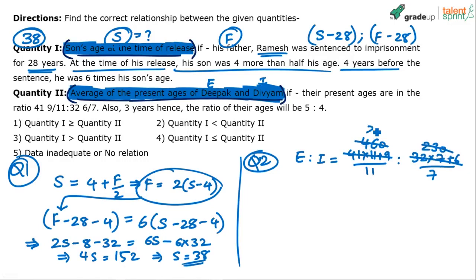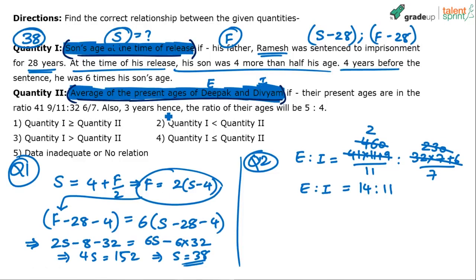230 cancels with 460 twice, so the final ratio simplifies to 2 times 7 to 11, giving E to I as 14 to 11. So the present ages are in the ratio 14 to 11. Let the ages be 14x and 11x. Now, 3 years hence the ratio of ages will be 5 to 4.